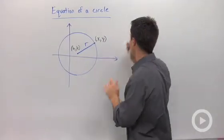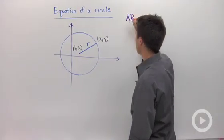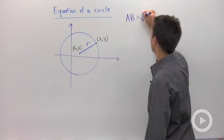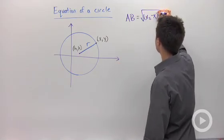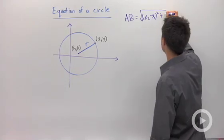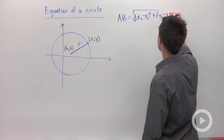We said that our distance formula between any two points a and b is equal to the square root of the differences of the x's squared, plus the differences of the y's squared.